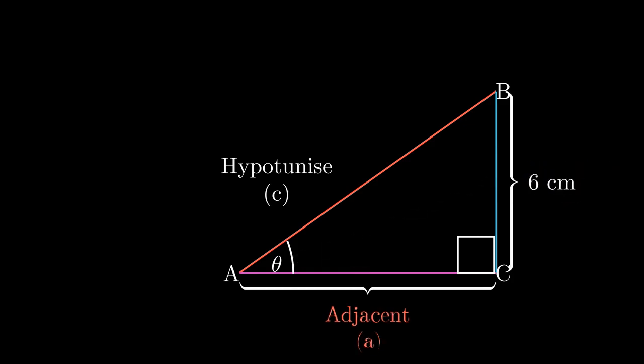If we have 6 cm for BC and 8 cm for AC, what would be the value of the hypotenuse AB? I want to find the length AB, given the length BC and AC.